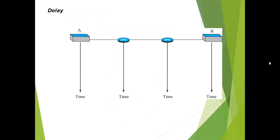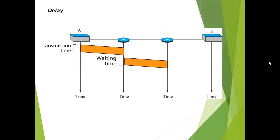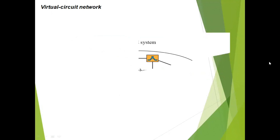Looking at the delay in the datagram approach — using the same A-to-B example — first there is transmission time from A to the first switch, then a waiting time at the next switch because the switch handles multiple connections with no dedicated link, then another delay. For every switch the packet crosses, delay increases. Compared to circuit switching, delays in the datagram approach are very high — that is why circuit switching has lower delay.